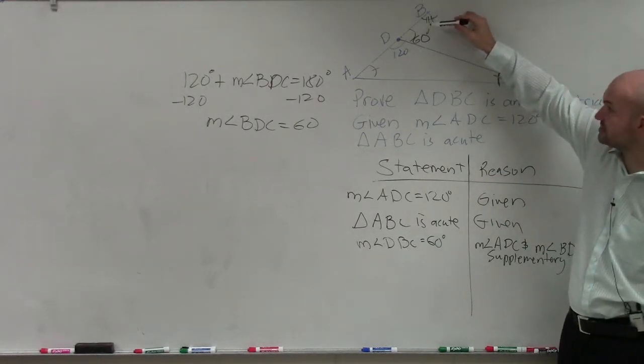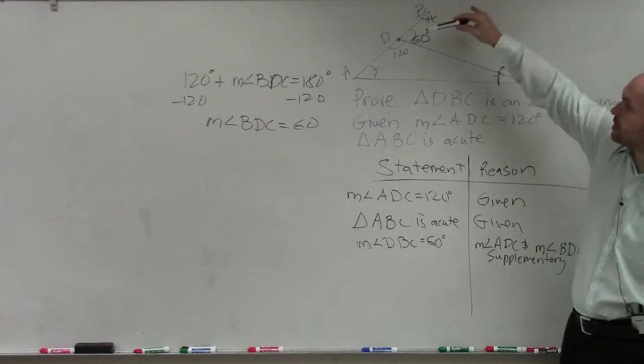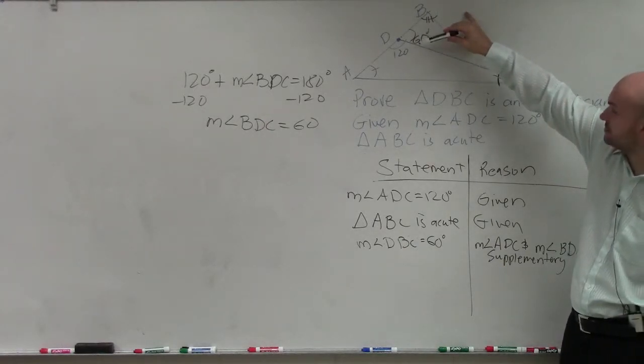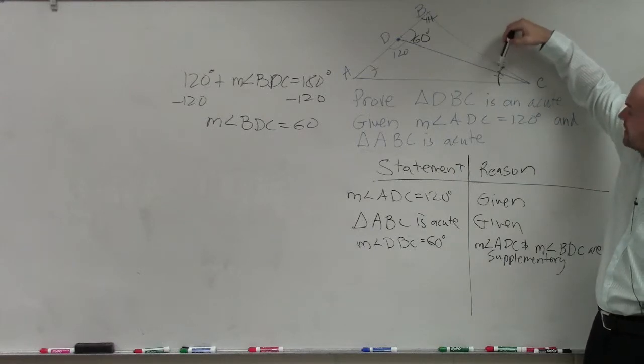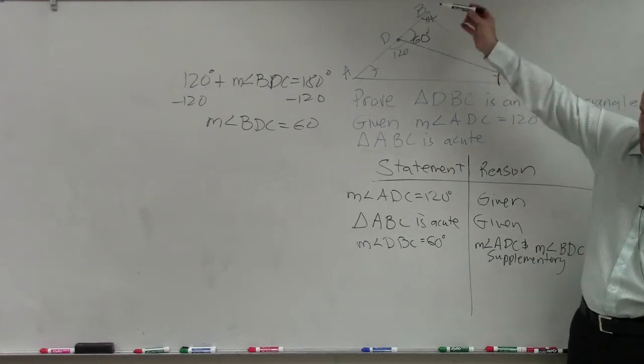So therefore, since B is acute, so this makes this an acute triangle, and we already know that this is 60 degrees. And then therefore, if that's acute, that means these angles also have to be acute as well.